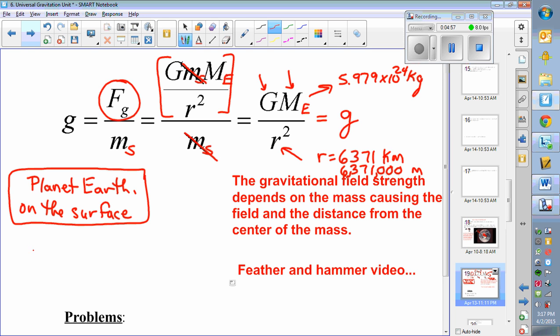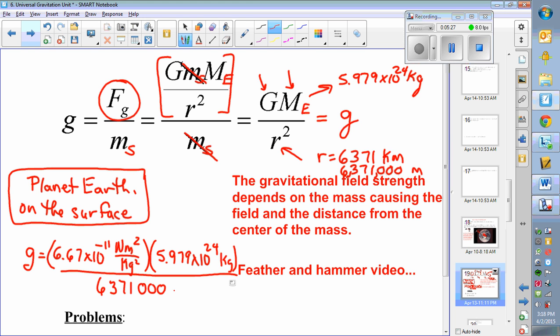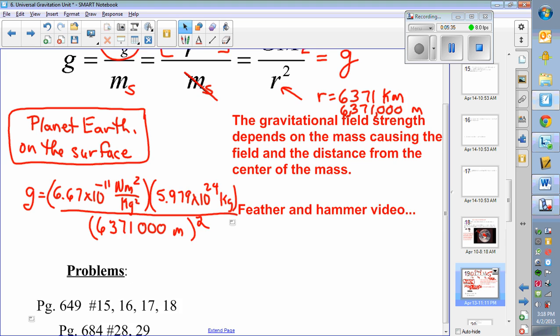G is a constant, so let's plug those numbers in: 6.67 times 10 to the negative 11 newton meters squared per kilogram squared times the mass of the earth 5.979 times 10 to the 24 kilograms. We divide that by 6,371,000 meters and we have to square that.